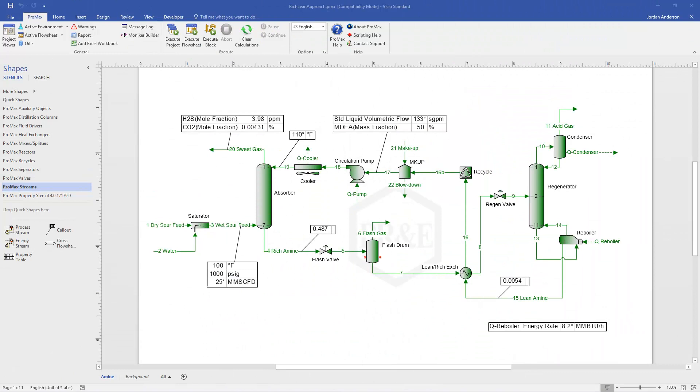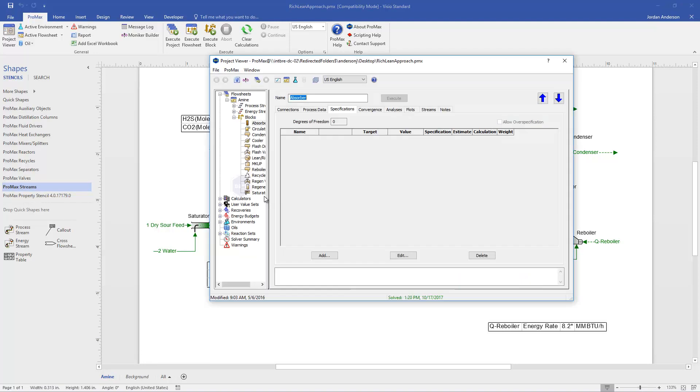So now we have an example simulation open here of an amine unit. We've figured out a flow rate and energy rate for our reboiler that seem to work. They get us to below 4 ppm H2S and so it looks like we're on the right track. Now we want to dive into our absorber and calculate the rich and lean approaches so we can get a better idea of how stable this system really is.